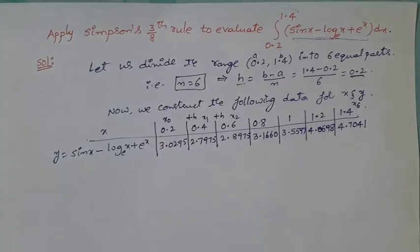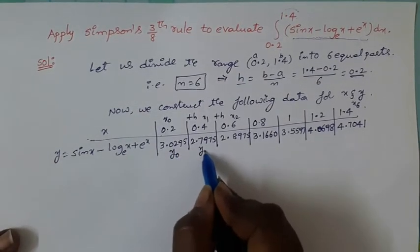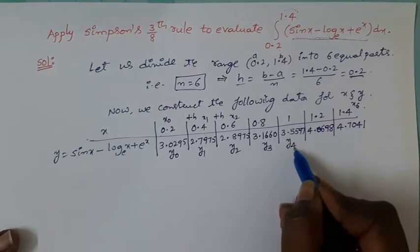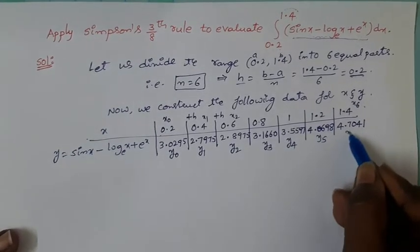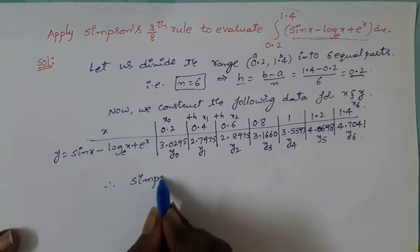Now put the names for function values, which are y0, y1, y2, y3, y4, y5, y6. Immediately, write the Simpson's 3/8 rule for given data.